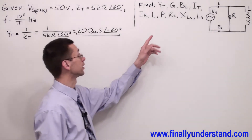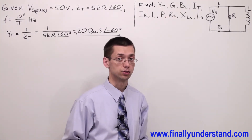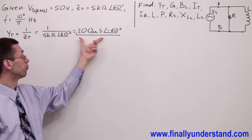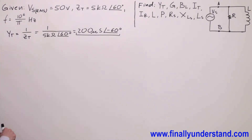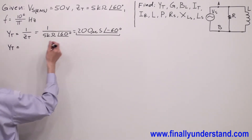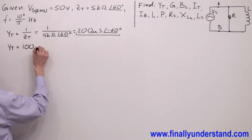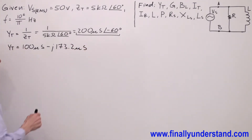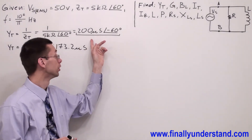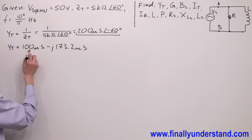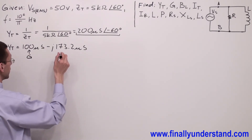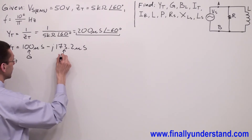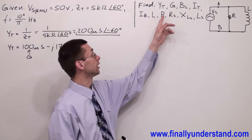Next, I have to find the conductance and inductive susceptance. In order to get these two values, I have to convert the total admittance from polar form to rectangular form. My Y-total after conversion is equal to 100 µS minus j173.2 µS. The real part of my answer is my conductance, and the imaginary part of Y-total is the inductive susceptance BL. So I got the answers Y-total, G, and BL.